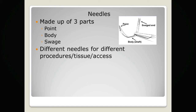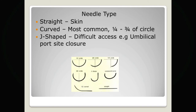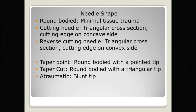Needles come in a variety of different shapes. You can have straight needles, which are used for closing skin, or more commonly curved needles, which can vary from a quarter to three-quarters of a circle. There is also a J-shaped needle used for closure of an umbilical port site after laparoscopic surgery. It is also important to consider the cross-section properties of the needle — needles come either round-bodied, which induce minimal tissue trauma, or as cutting needles, which employ a triangular cross-section with a cutting edge on the concave side and are commonly used for tougher tissues such as skin.